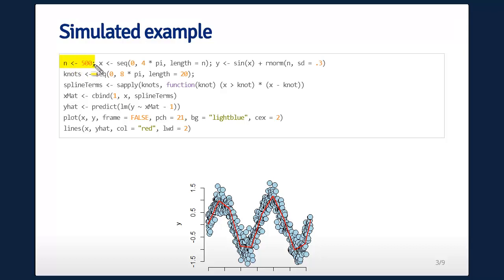I'm going to simulate some data. n is 500, x is just a sequence, and you'll see why I picked 0 to 4 pi as the limit of the sequence. My y is sine x plus normal errors. Then I'm going to just get a bunch of knot points, I'm going to get 20 knot points equally spaced somewhere along the way. My spline terms are, I'm just going to do this A plus function, this little spline function at each of these, for each of my x values. My x matrix is going to have 1, it's going to have x, and it's going to have all my spline terms that I just created.